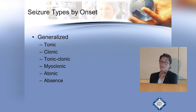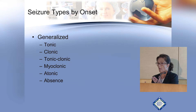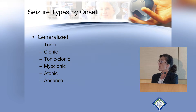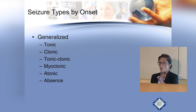Regarding seizure type, there are many different ways to define seizures, and the most useful is how it starts — either it starts in one place and spreads, or it starts everywhere in the brain at once. The generalized pattern can be tonic, clonic, or a variety of different types, and the common theme is there is no warning.